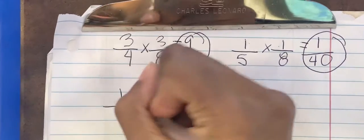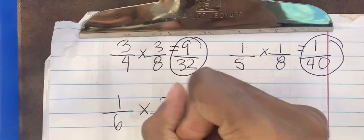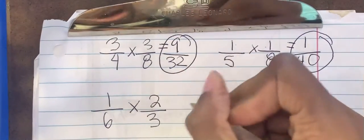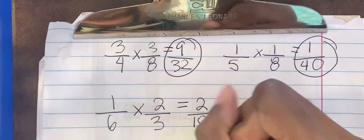Let's do 1 over 6 times 2 over 3. We do 1 multiplied by 2, which is 2. 6 multiplied by 3, 18.